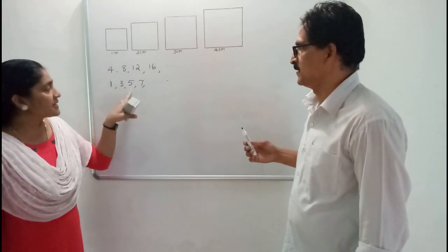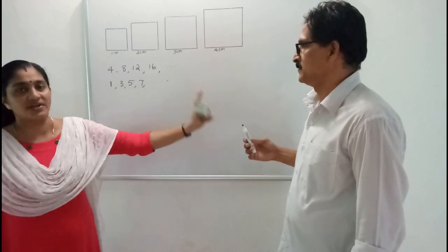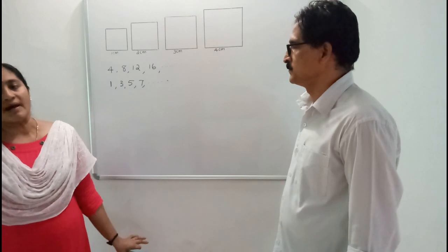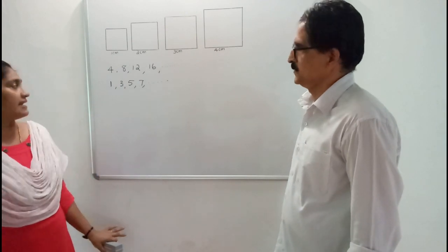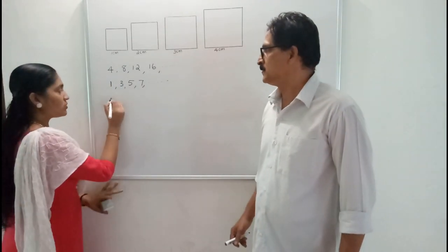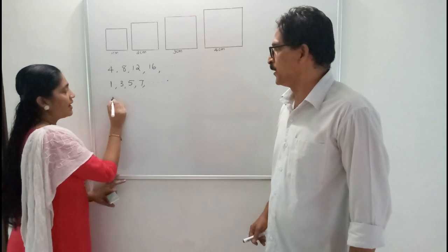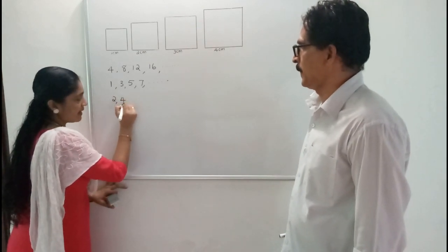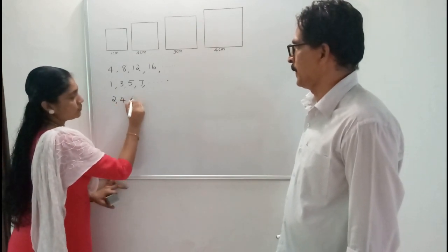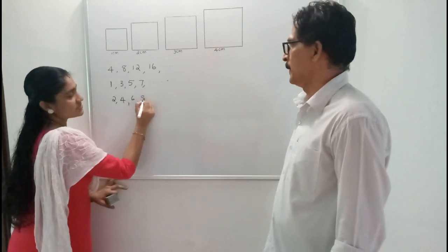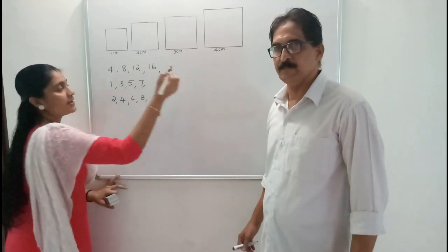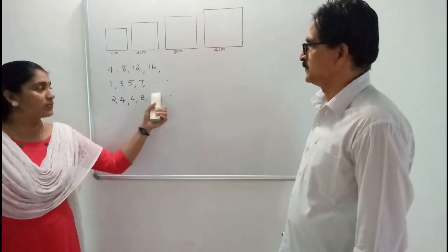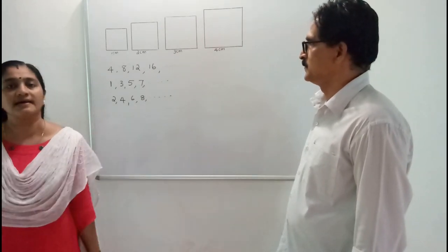For example, the sequence 2, 4, 6, 8, etc. are even numbers. Starting from 2 and adding 2 each time gives us 2, 4, 6, 8, and so on. This is also an arithmetic sequence.